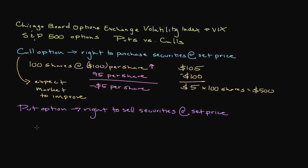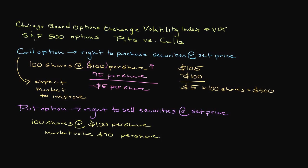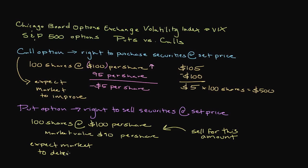For example, let's say that you purchase a put option allowing you to sell 100 shares of XYZ Company at $100 per share for a 7-day period. All of a sudden, the share price of XYZ Company plummets from $105 to $90 per share. Because you are the owner of a put option, you can exercise your option and sell your shares at $100 per share instead of the market value of $90 per share, which would save you quite a bit of money. The only reason an investor would purchase a put option is if they expected a security to decrease in value and wanted to protect their investments or take advantage of less vigilant investors.